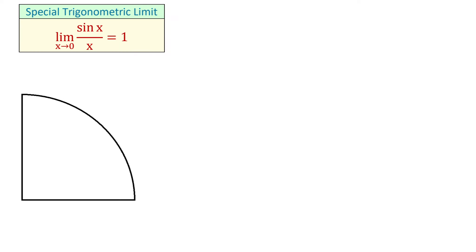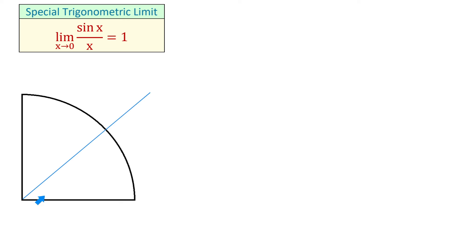For this we need the unit circle in quadrant 1. Here we have a quarter of the unit circle and the radius is 1. We will start by drawing an angle in standard position, then let this angle be angle x and the point where the terminal side crosses the circle be point A.